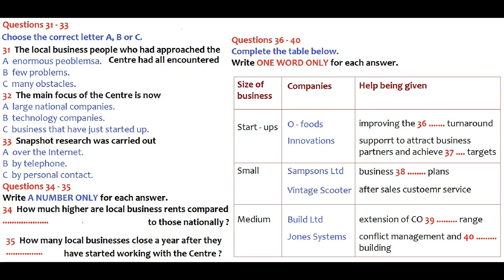The first of the two medium-sized companies that the scheme is monitoring is Build Limited, which employs 47 people. A comparison of their products and services with other businesses in the area is being carried out by a researcher, who is trying to support them in their efforts to extend the company's product range. The last company, Jones Systems, is perhaps the most interesting because it has been the victim of considerable personnel problems, which have been affecting the day-to-day operations of the company. And so, we are looking at conflict management and team building within the company.